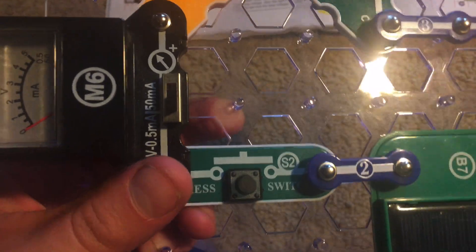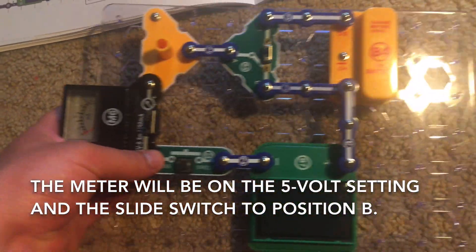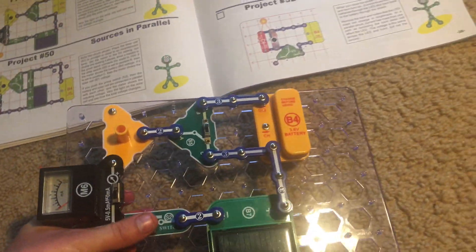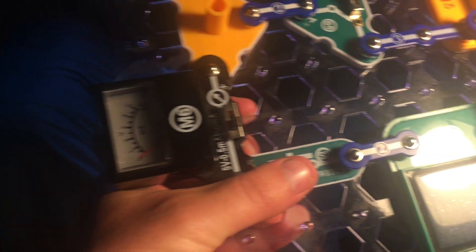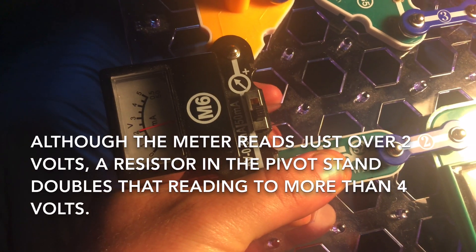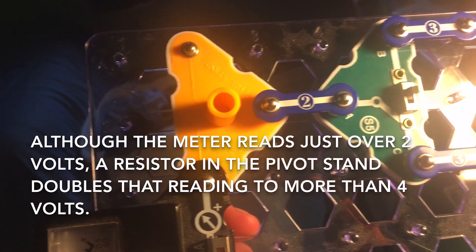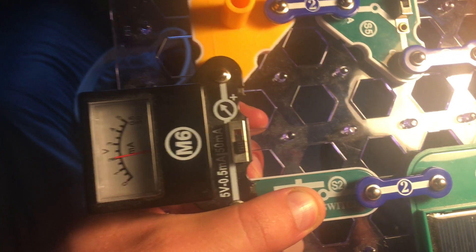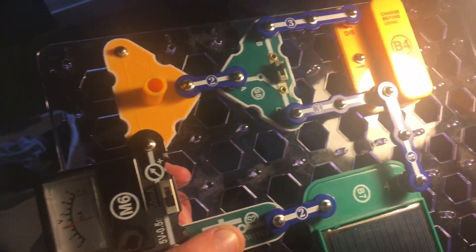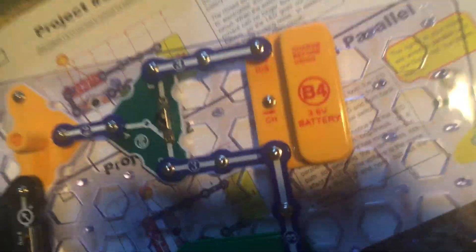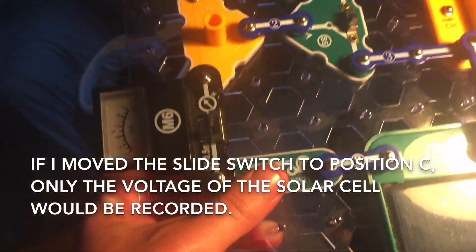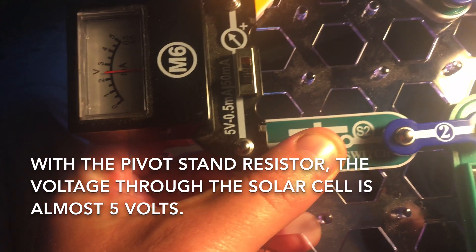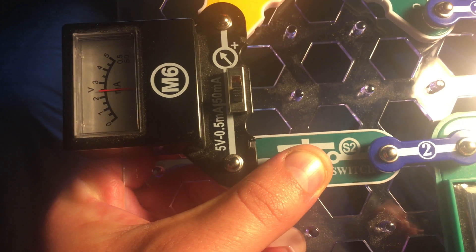The voltage meter will be set to the 5 volt setting and we will hold down the press switch and the slide switch will be set to position B. I am going to hold it up to this lamp and hold down the press switch. Now, the voltage meter reads just over 2 volts, but with the pivot stand, one of the resistors in it will double the voltage. So it's really at least 4 volts, a little bit over I would say. Now, if I was to move the slide switch to position C, only the voltage of the solar cell will be recorded. And you can see that it is higher, nearly two and a half volts, although that would probably be about five volts when doubled.